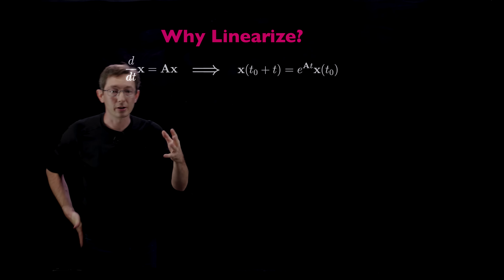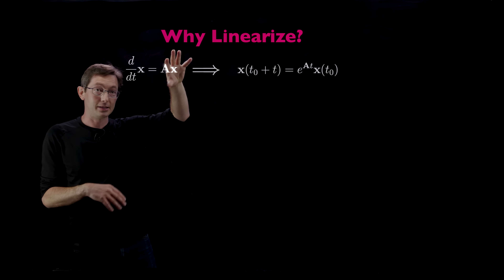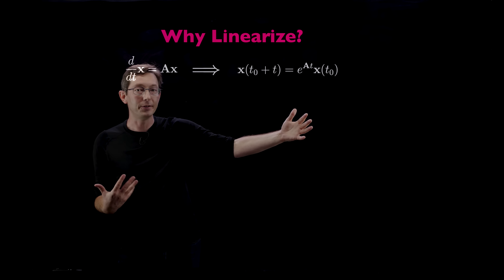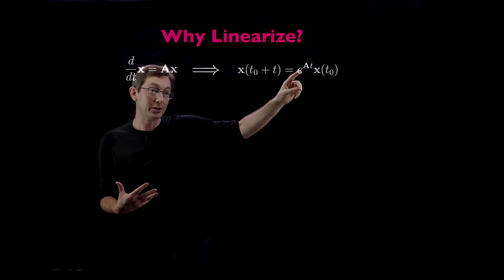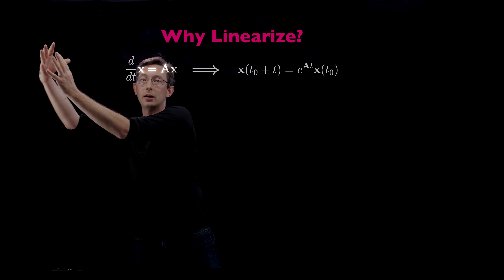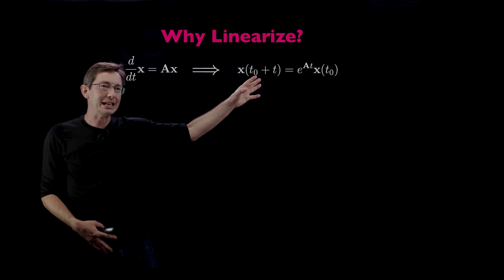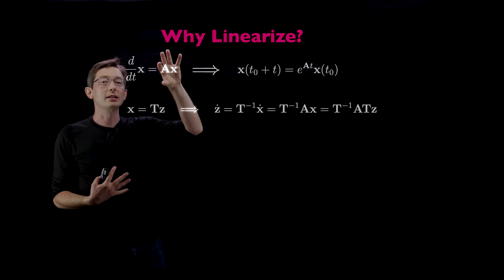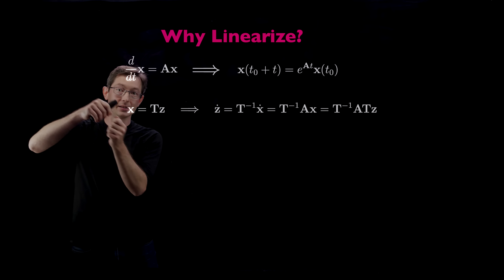We linearize because we know a lot about linear systems. The strategy is: find the fixed points, linearize around them, and do linear analysis. For a linear system x_dot = Ax, we know the solution for any future time t: x(t) = e^(At) * x_naught — the matrix exponential of e^(At) times the initial condition. This is easy to compute on modern computers, and lets you advance any initial condition forward or backward in time.